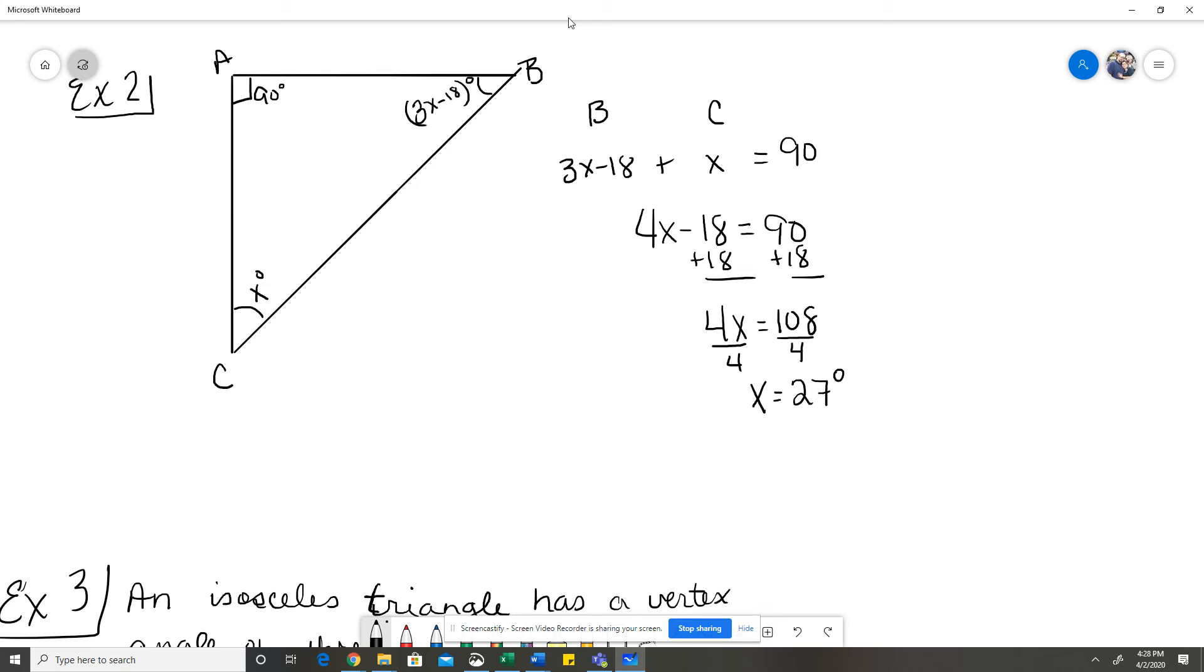Now that's not our final answer. That gives me angle C. Angle C is going to be 27 degrees, but to get angle B, I still have to plug this 27 in. So for angle B, I'm going to do 3 times 27 minus 18. When I do 3 times 27 minus 18, I get 63 degrees. So the two missing angles are 27 degrees for angle C and 63 degrees for angle B.